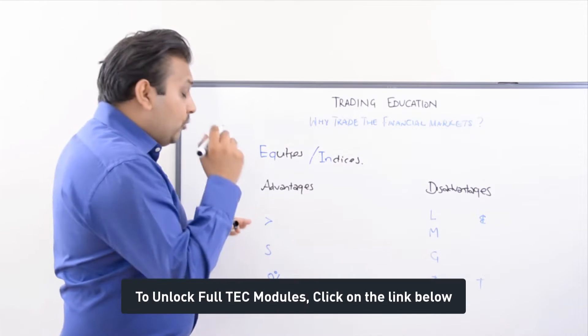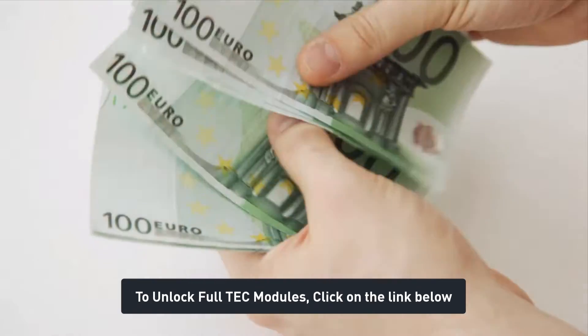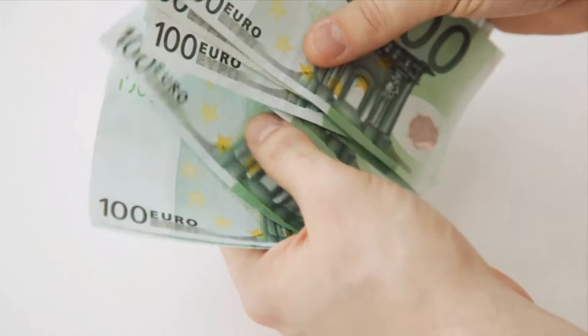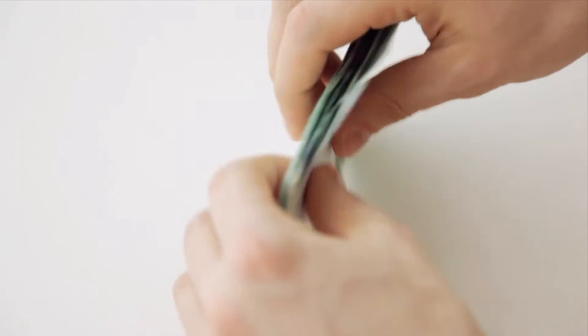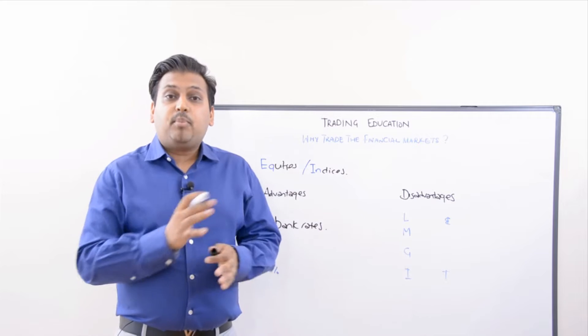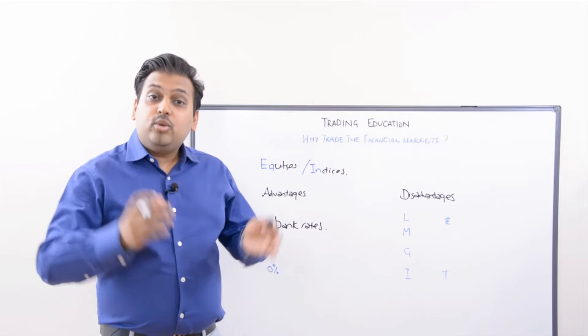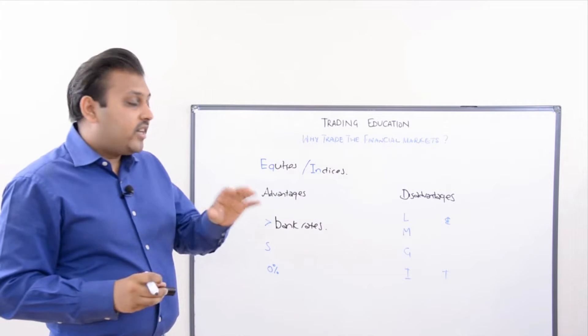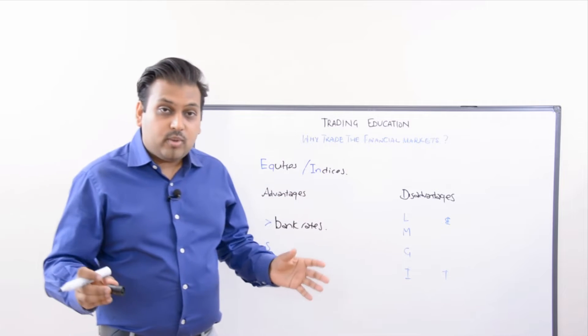The rates that you get of return on your investment massively beat the bank rates. Those of you that are in the UK, the current bank rate at the time of making this video is 0.75%, and you can get a much greater yield on your investments with stocks if you know what you're doing, of course, than what the bank rates will actually provide you.